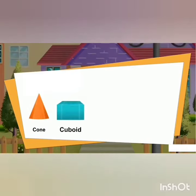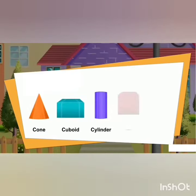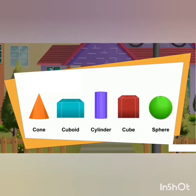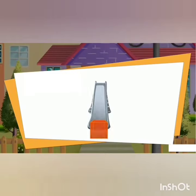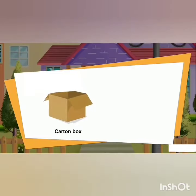Next, we are going to discuss about the solid shapes which can roll, slide, and roll and slide. You can see a cube — it can only slide because it has a flat surface. Examples are a carton box and a dice.